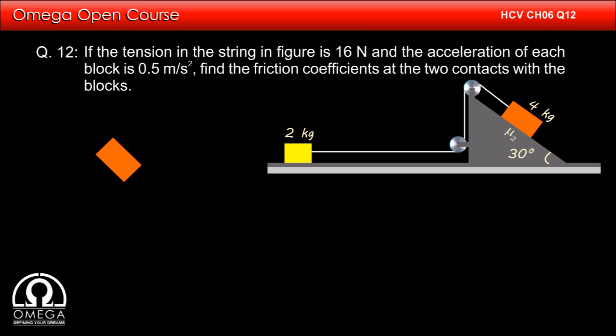Now let us draw the free body diagram of the 4 kg block. If we denote its mass with M₂, then gravitational force of M₂g is acting on it in vertically downward direction. The component of gravitation along the incline is M₂g sin θ and perpendicular to the incline is M₂g cos θ where θ is the angle that incline makes with the horizontal.